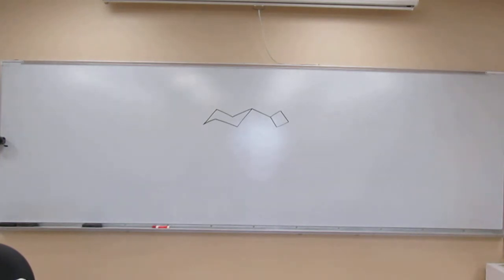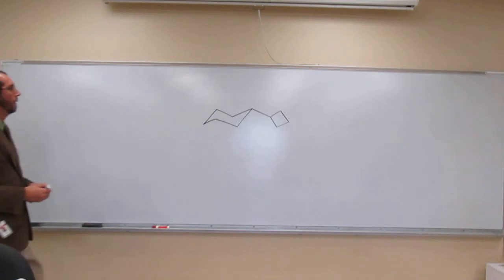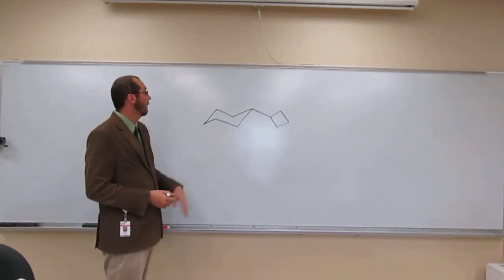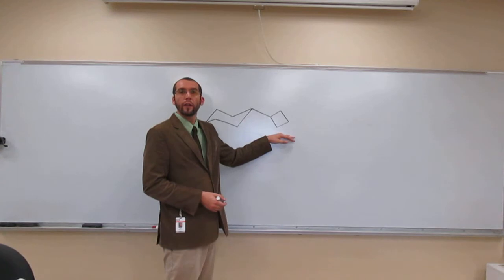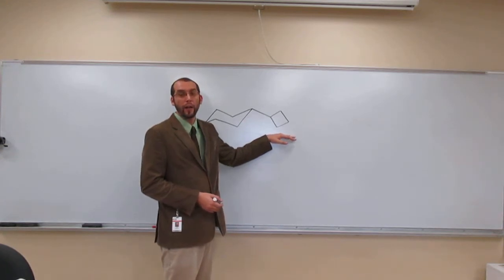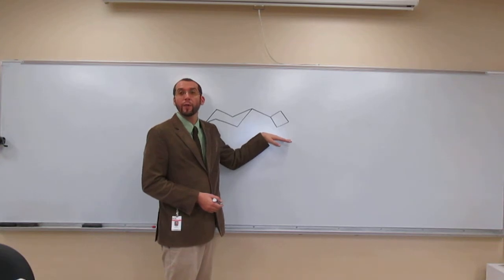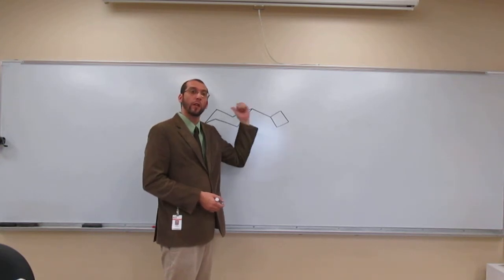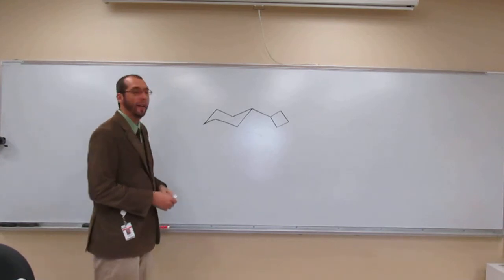The larger cycle. The larger of the two. So the larger of the two is a cyclohexane, right? And then what is this thing here? Cyclobutane, right. So we're going to say that we have a cyclobutane substituent on our cyclohexane.